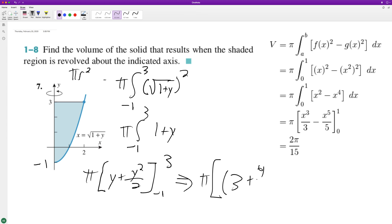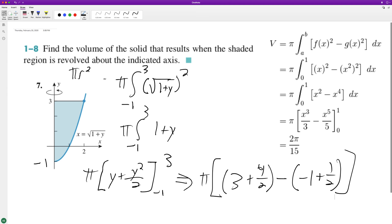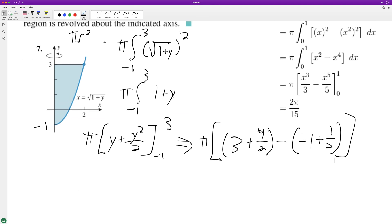3 plus 9 over 2 minus negative 1 plus 1 half. So this is 3 plus 4.5 plus 1 plus 0.5.